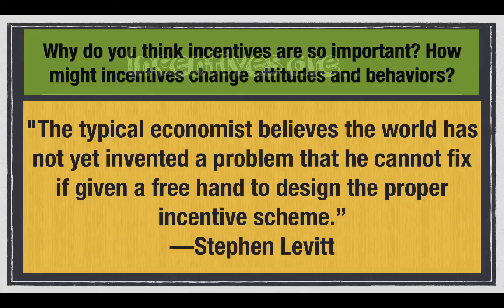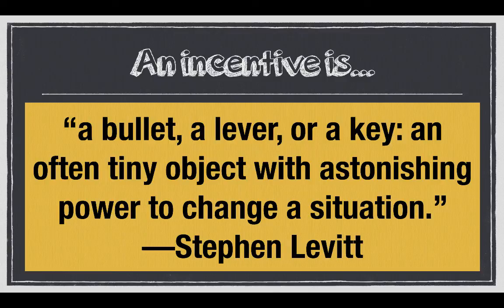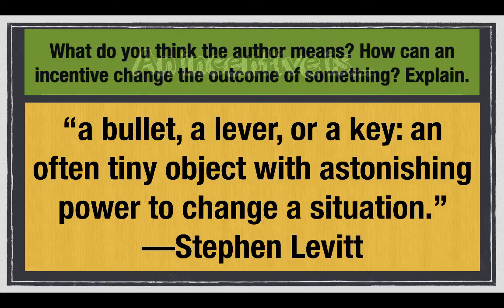Thanks for answering that. Now, moving forward: 'An incentive is a bullet, a lever, or a key — an often tiny object with astonishing power to change a situation.' Again, that's Levitt. I want you to break down this quote — what does the author mean? How can an incentive change the outcome of something? What is a bullet, a lever, or a key, and how do these astonishingly small things change a situation? Think of examples.